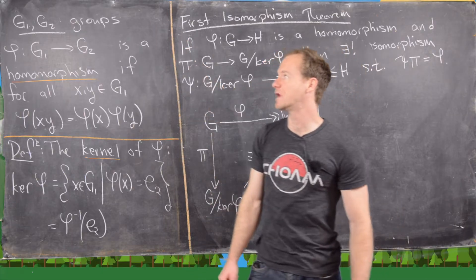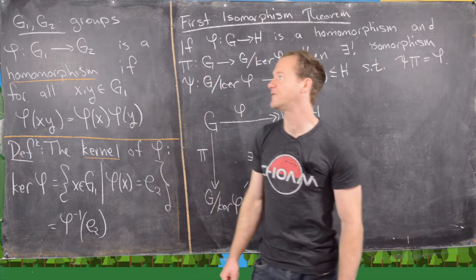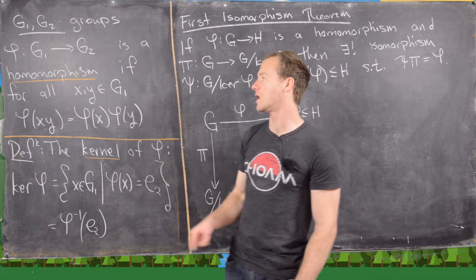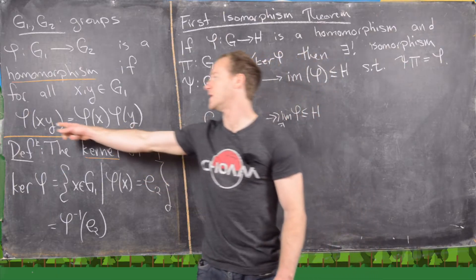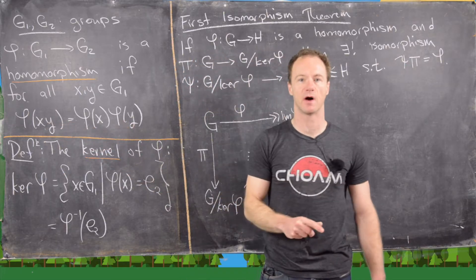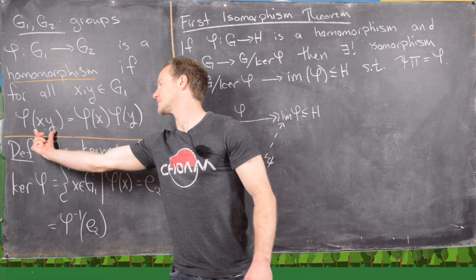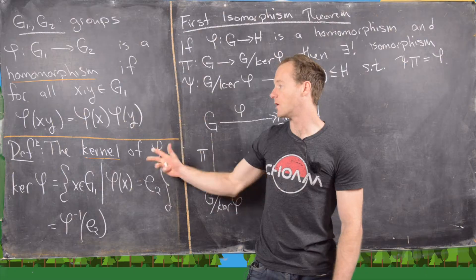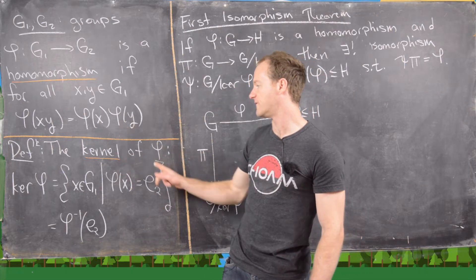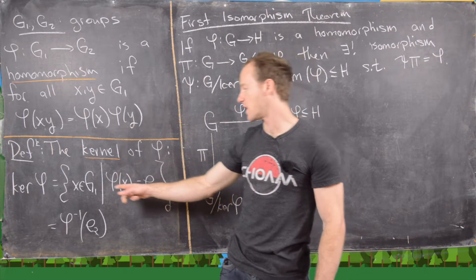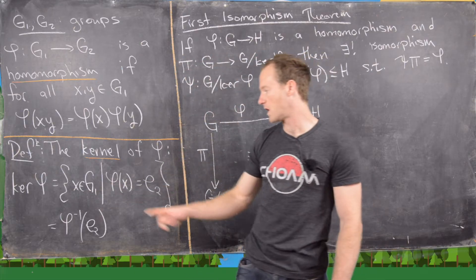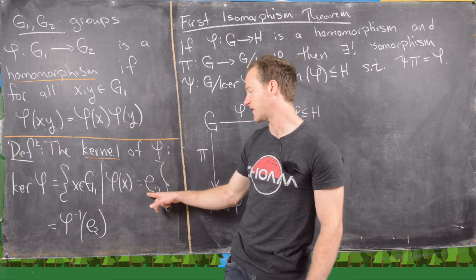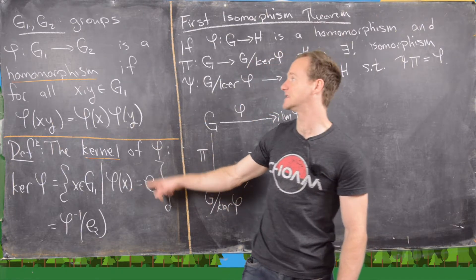Let's say G1 and G2 are groups and we have a map phi from G1 to G2. We say that's a homomorphism if for all x in G1 we have phi of xy equals phi of x times phi of y, where the first multiplication happens in G1 and the second in G2. The kernel of phi is the set of all x in G1 that get mapped to the identity e2 in G2.